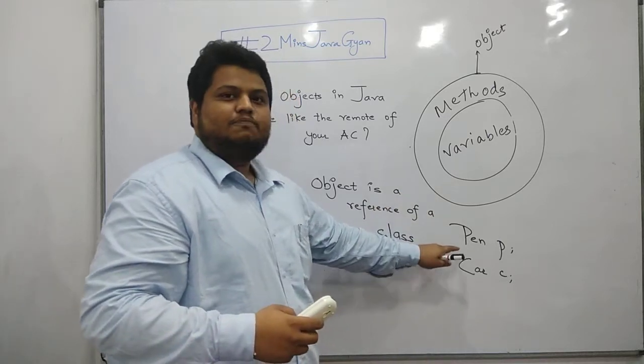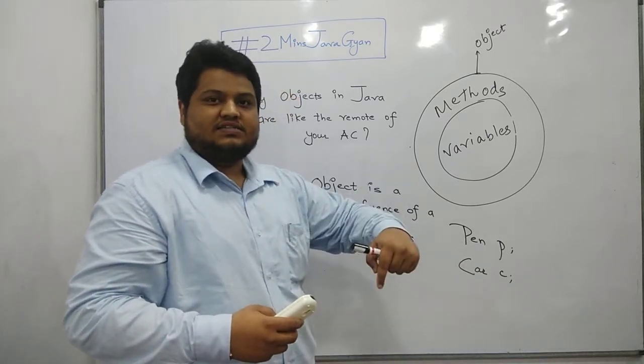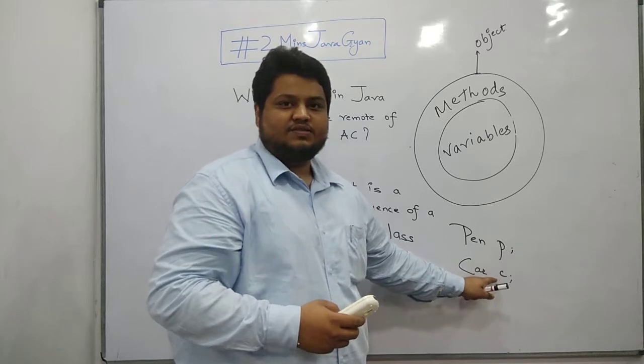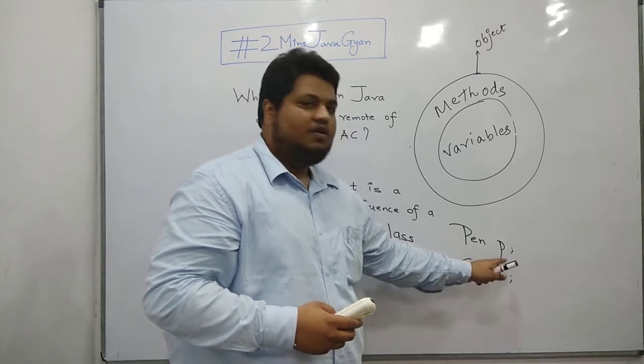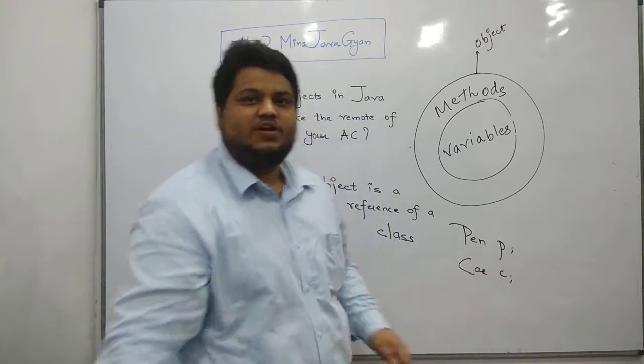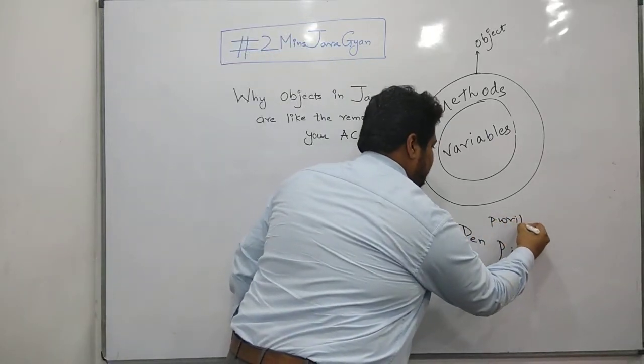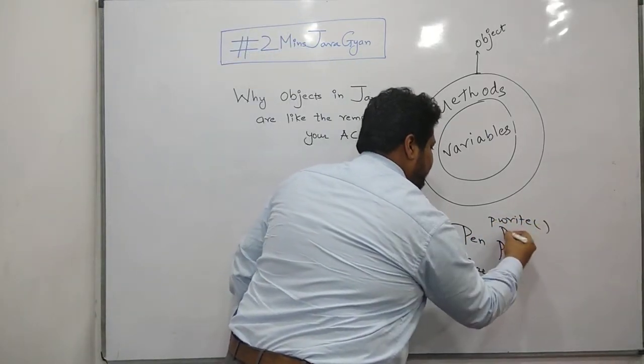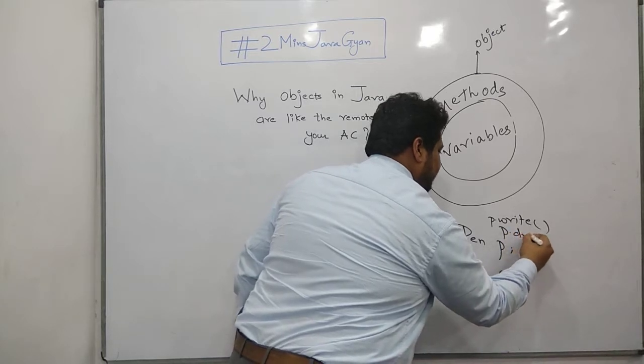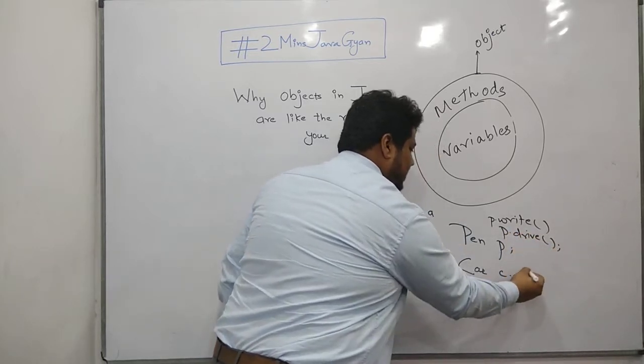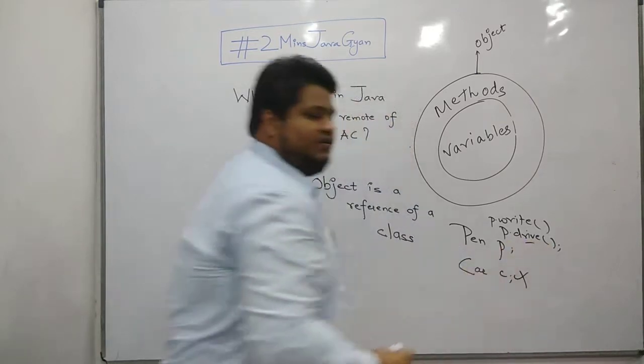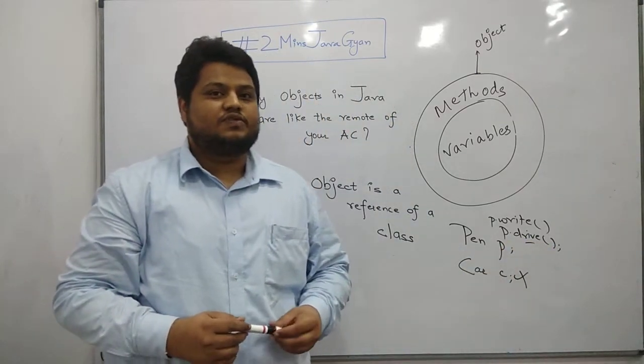For example, I have pen. Now, pen is a class, whereas P is the object of that class. Now, if I call anything on pen P, let's say P.write is a valid thing. But P.drive is something which was supposed to be executed on class car, but I tried it executed on my class pen. Hence, it is not going to work.